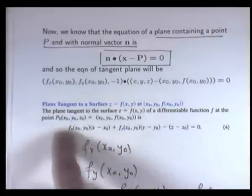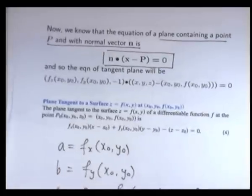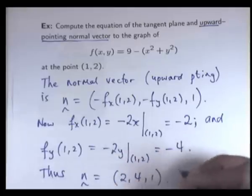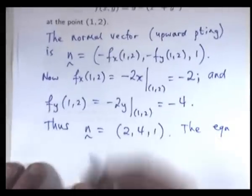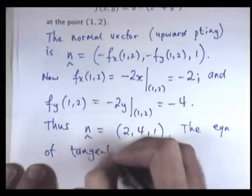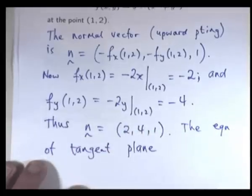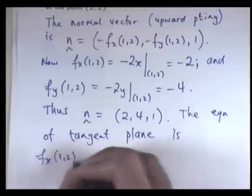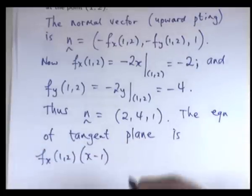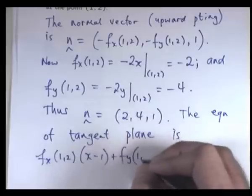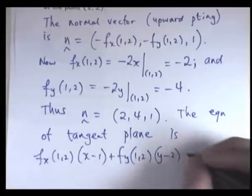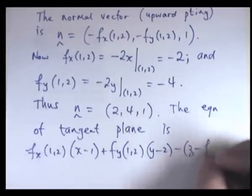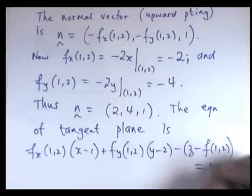So let's go back to our equation for the tangent plane, and we can just substitute in. So the equation of the tangent plane is the following. It's going to be f sub x at (1, 2) times x minus 1 plus f sub y at (1, 2) times y minus 2 minus z minus f at (1, 2), and this is all equal to 0.